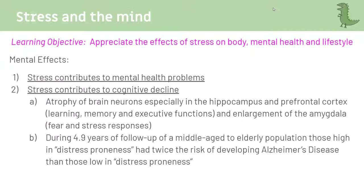Stress causes mental health problems and cognitive decline. Specifically, you're more likely to get Alzheimer's — that's the main disease associated with stress, because certain parts of your brain start breaking down. When stressed, your amygdala (the emotional part of your brain) gets a little larger, meaning the next time you're stressed you have more emotional reactivity — it becomes a positive feedback loop, getting more and more stressed.